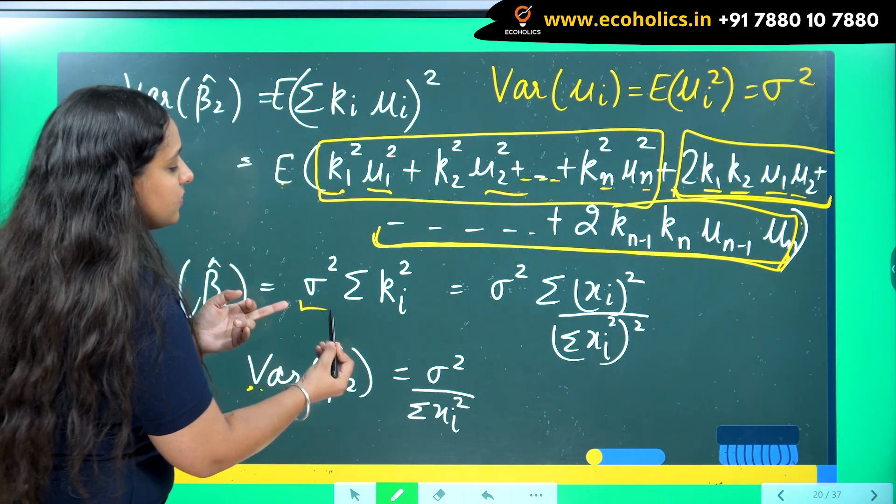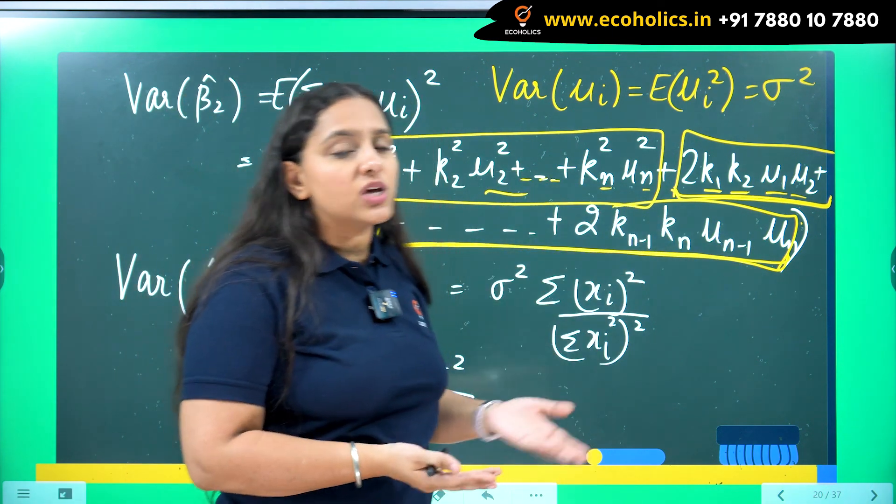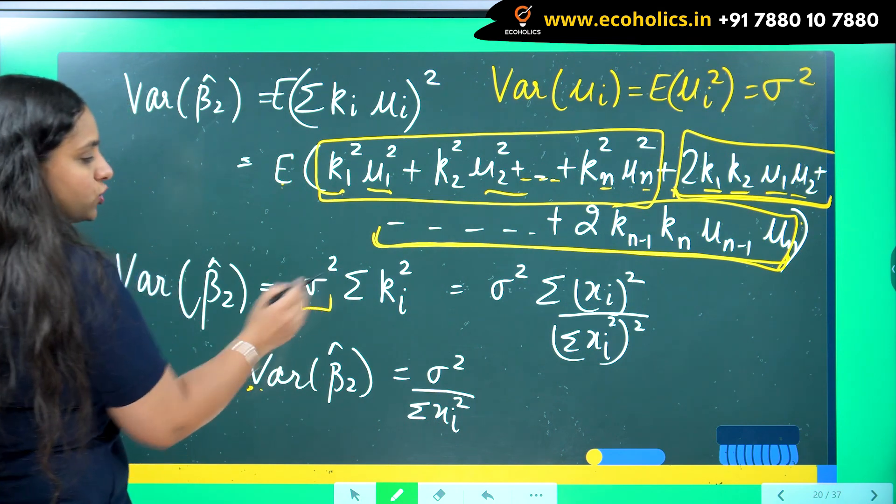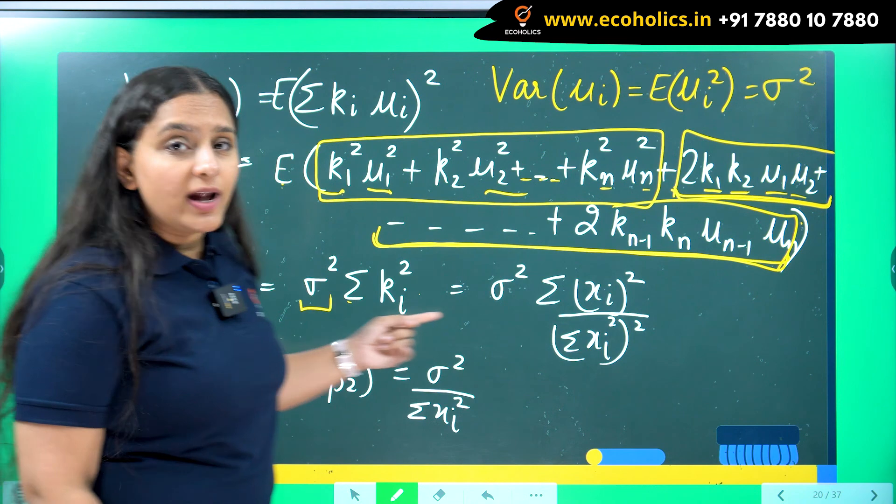So I have multiplied sigma square with that because the number of k i's I am going to have, the same number of sigma squares I am going to have there as well. So sigma square summation k i square. Now what was the value of k i?